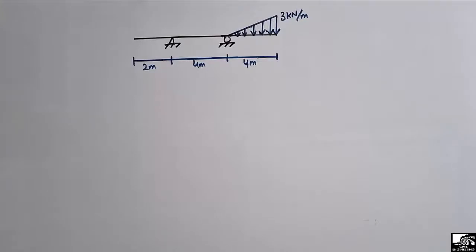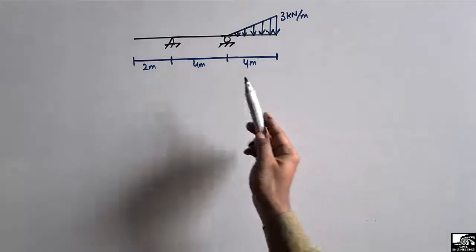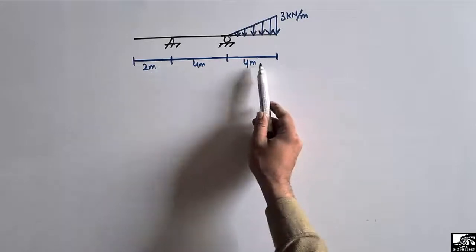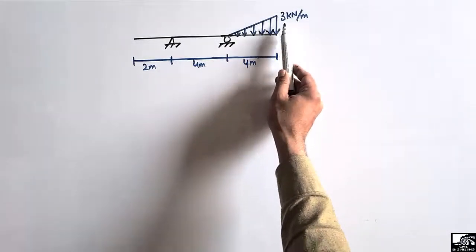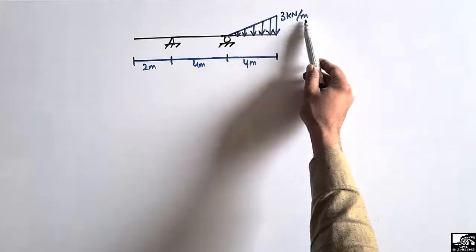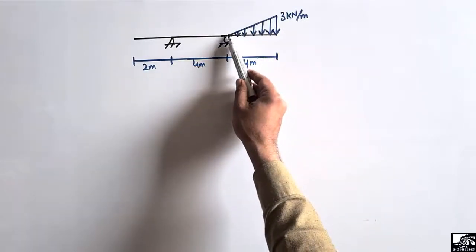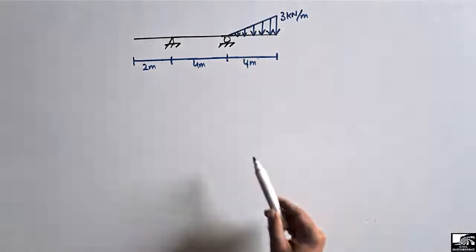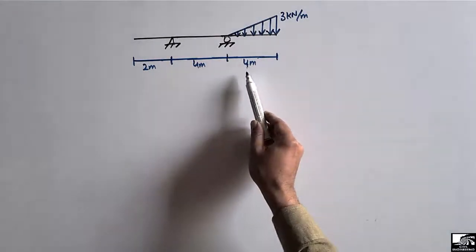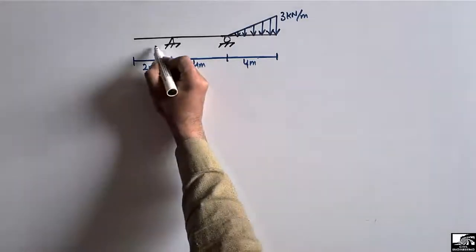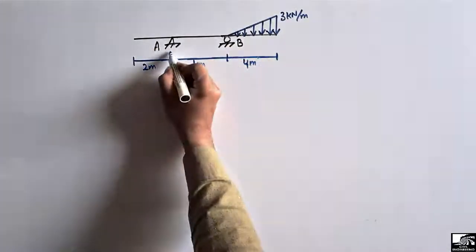Welcome back to the civil engineering YouTube channel. Today we are going to analyze an overhanging beam of total length 10 meters. There is a triangular load acting on one portion of the beam, with a maximum magnitude of 3 kilo Newton per meter, starting from the roller support and ending at the last end of the beam. We are going to find the support reactions and draw the shear force and bending moment diagram. Let's call this support A and support B.